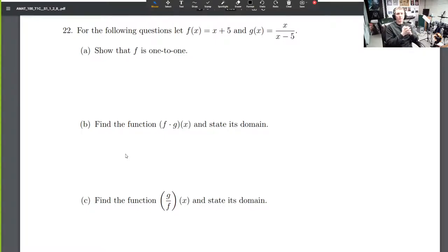So I'll go ahead and get started on this problem, and we'll end when we end. Question number 22 of the mock test. For the following questions, let f(x) equal x plus 5, and g(x) equal x divided by x minus 5. Show that f is one-to-one.